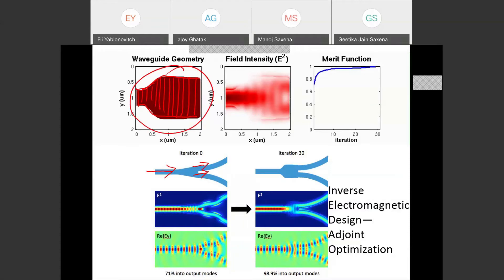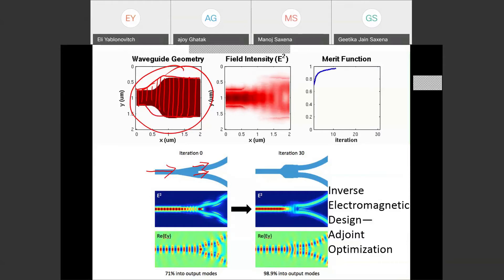It is actually a very difficult optimization problem. Watching the video of successive iterations, you end up with a very good shape — that splitter is 98.9% efficient, which is extraordinarily good and was actually a record in its time. This is exactly the type of optimization.